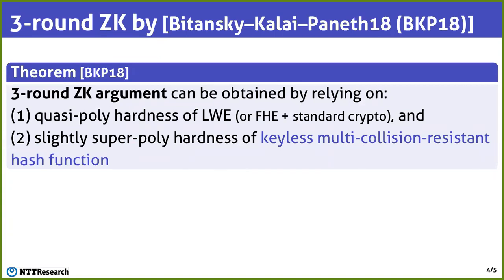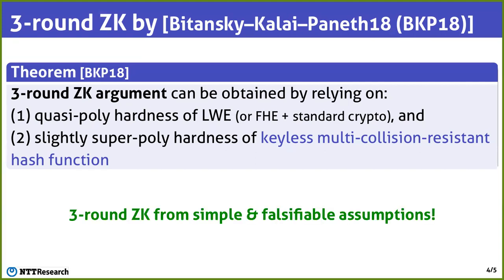This frustrating situation has changed recently because of a recent work by Bitansky, Karai, and Paneth, who gave a 3-round zero-knowledge argument based on quasi-polynomial hardness of the learning with errors assumption, and slightly super-polynomial hardness of keyless multi-collision resistant hash functions. The assumption about the keyless multi-collision resistant hash function is a falsifiable assumption with a relatively simple definition, and it's plausible to assume that this assumption is satisfied by a real-world keyless hash function like SHA. So this result of Bitansky et al. can be viewed as showing that 3-round zero-knowledge can be obtained from simple plausible assumptions.